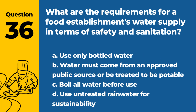Question 36. What are the requirements for a food establishment's water supply in terms of safety and sanitation? A. Use only bottled water. B. Water must come from an approved public source, or be treated to be potable. C. Boil all water before use. D. Use untreated rainwater for sustainability. Answer: B. Water must come from an approved public source, or be treated to be potable. The water supply in a food establishment must be from an approved public source, or treated to ensure it is potable and safe for consumption and food preparation.